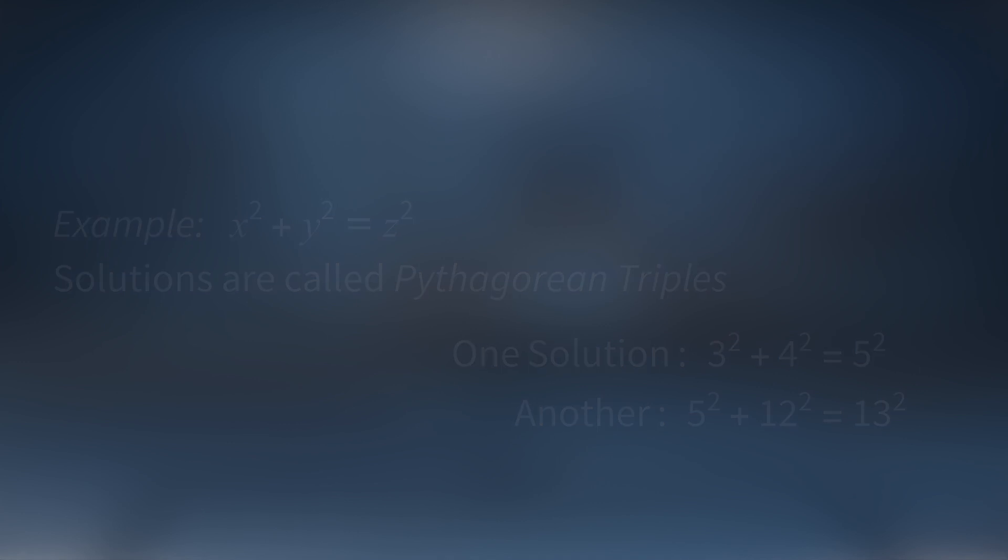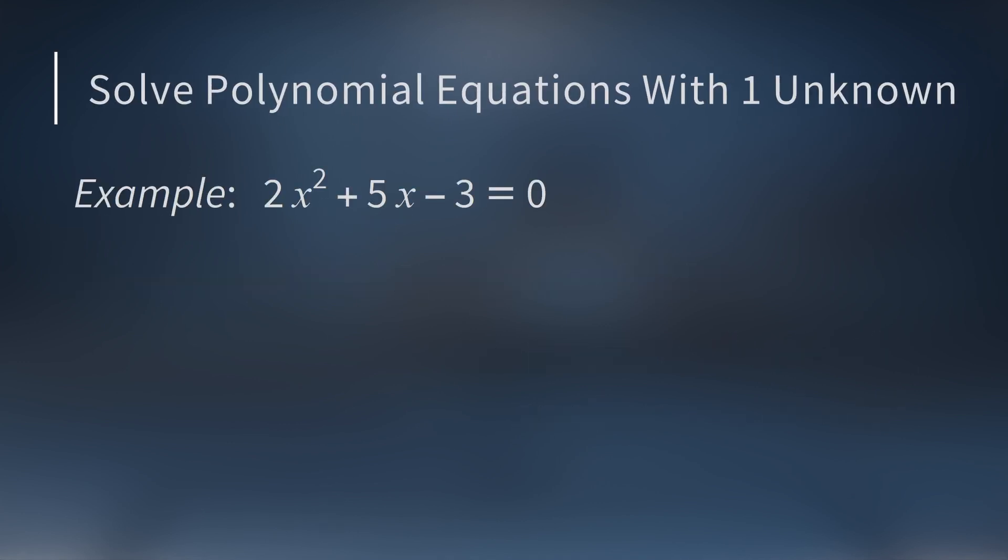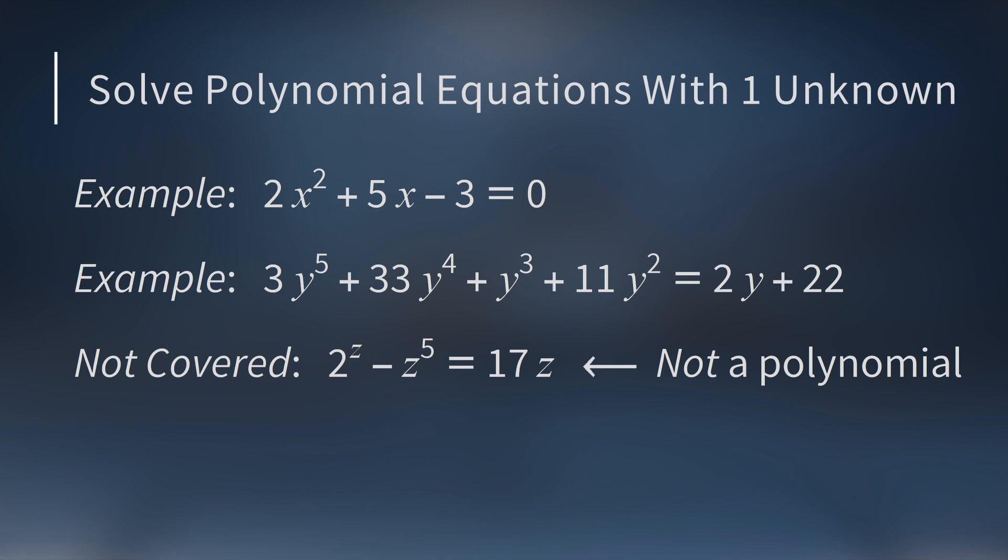But today we are going to focus on polynomial equations with a single unknown. For example, 2x² + 5x - 3 = 0, or 3y⁵ + 33y⁴ + y³ + 11y² = 2y + 22. But we will not look at equations like 2^z - z⁵ = 17z since the left-hand side is not a polynomial. This is because the first term, 2^z, has a variable as the exponent.